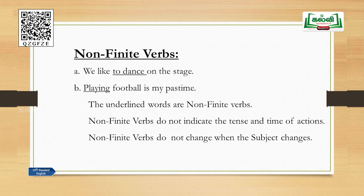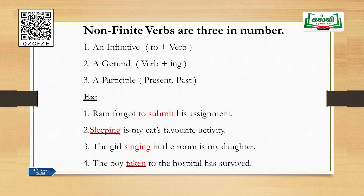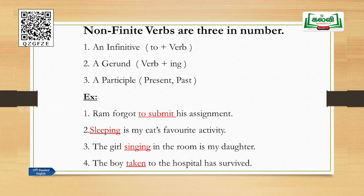In sentence B, 'Playing football is my pastime,' there are two verbs: 'playing' and 'is.' Playing is a non-finite verb, and 'is' is a finite verb — it shows present tense very clearly. Non-finite verbs are three in number. Number one: an infinitive — the form is 'to' plus a present tense form of the verb, such as to go, to come, to dance, to sit, to stand, to teach, to sing. Number two: a gerund.